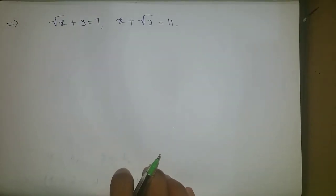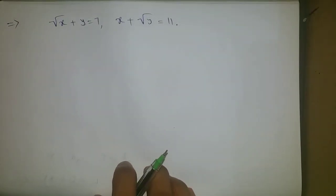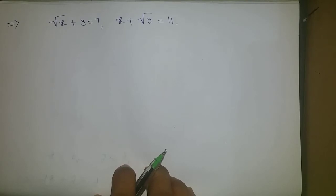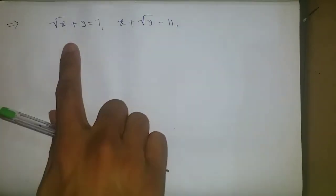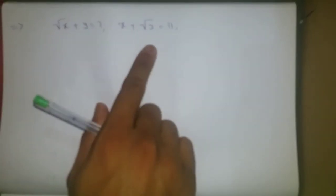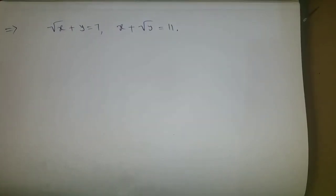Hello everyone. In this video we are going to solve a problem from pair of linear equations in two variables, but a little different kind of problem. The given equations are root(x) + y = 7 and x + root(y) = 11. Both equations have square root symbols.